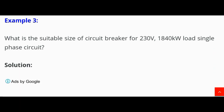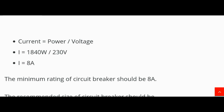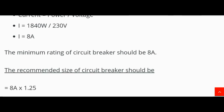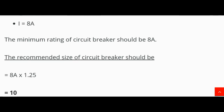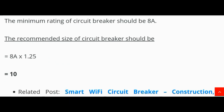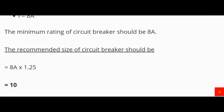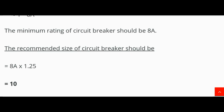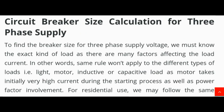Example 3: What is the suitable size of circuit breaker for a 230 volt, 1840 watt single phase circuit? Solution: I = P / V = 1840 W / 230 V = 8 ampere. The minimum rating of circuit breaker should be 8 ampere. The recommended size of circuit breaker should be 8 A × 1.25 = 10 ampere.